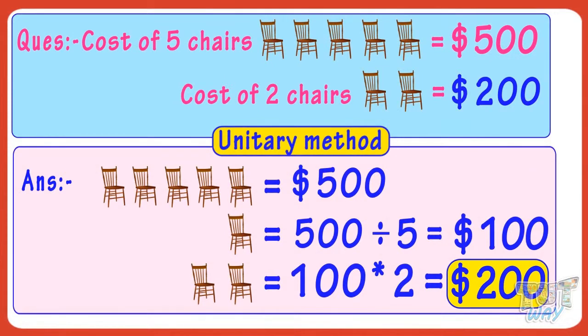So this is the unitary method, where we first find the cost of one item and then the cost of the desired number of items.